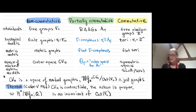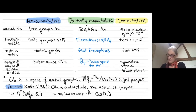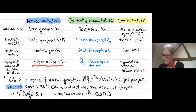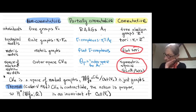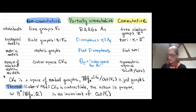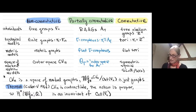I can add another row to my table — what belongs in the non-commutative universe and what in the commutative universe. I have groups, topological models, metric spaces that are models for the groups, and a space of marked metric spaces. In the commutative case, the space of flat tori is something studied for many years — it's just the symmetric space SL_n(R)/SO(n), a contractible space homeomorphic to Euclidean space. In the non-commutative universe there's an analog called outer space.